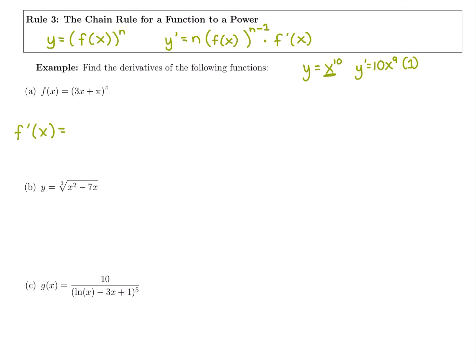Looking at f of x, its derivative is f prime of x. We have 3x plus pi raised to the fourth — more than just x being raised to a power, so this is a chain rule. Bring down the power: 4. Subtract one for the new power: 4 minus 1 is 3. Put that same original piece inside, then multiply by the derivative of the inside. Derivative of 3x is 3, derivative of pi is 0. The hardest part about this rule is recognizing it.